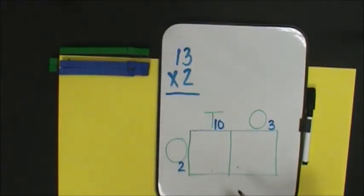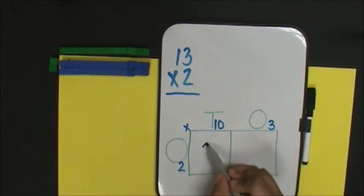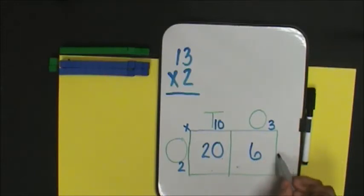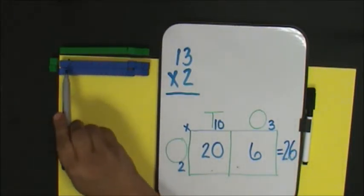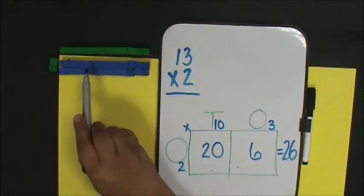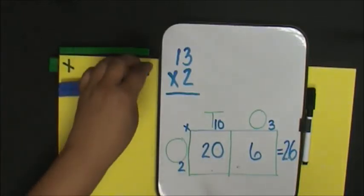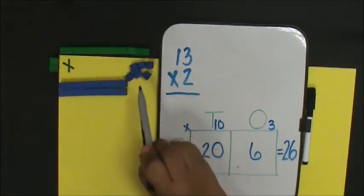And now I will multiply. 10 times 2 is 20, 3 times 2 is 6. These are my partial products. When I add them my product is 26. I have 20 and I have 6.